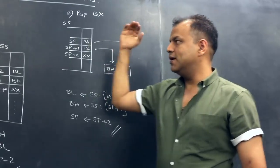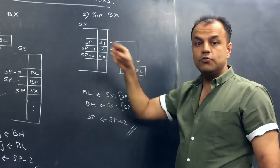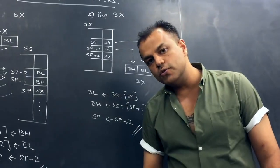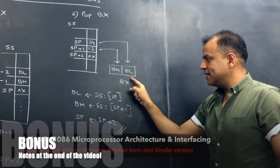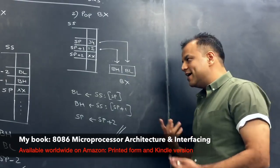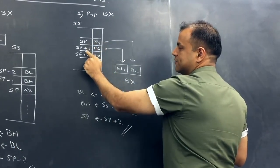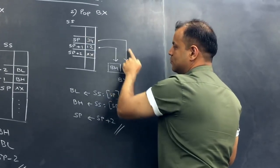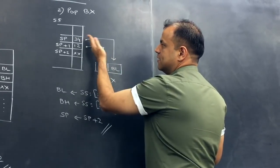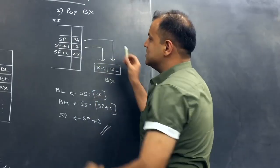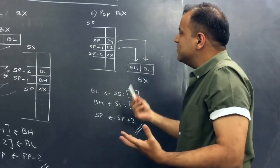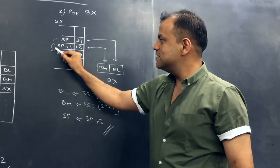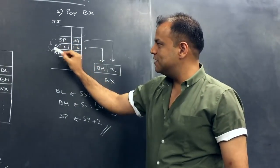Just like PUSH, POP can only use a 16-bit register. Popping 16-bit data means it comes from two memory locations. The address SP is the lower address, so it gives the lower byte to BL; SP plus 1 is the higher address, so it gives the higher byte to BH. Once these two have been popped out, the new top of stack becomes what was below — similar to deleting the two top messages from your SMS folder — and SP becomes SP plus 2.